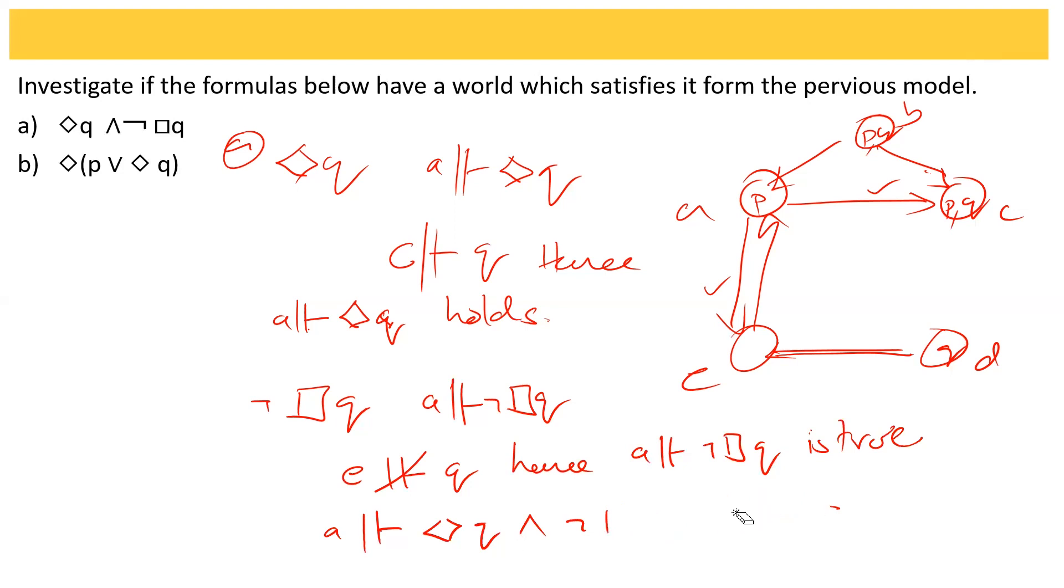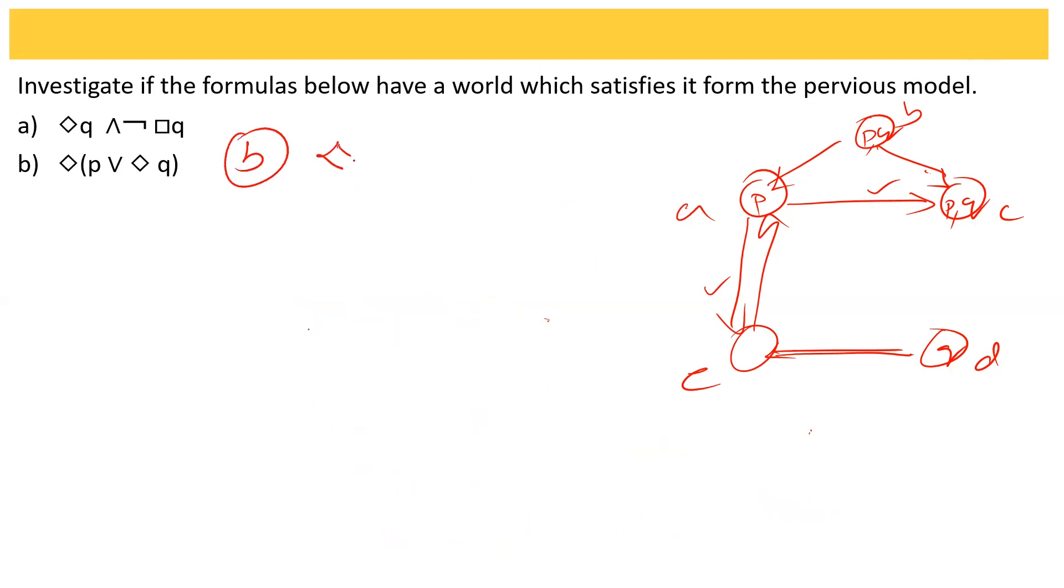Now let us look at the second part. There is a possibility of a path which contains P and the next state from there is Q. Let me consider here the node B.